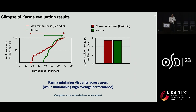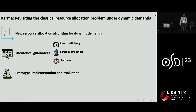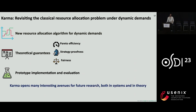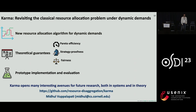In summary, I've presented Karma, a new resource allocation algorithm for dynamic demands with strong theoretical guarantees that translate well into practice. With this project, we've revisited a fundamental aspect of the classical resource allocation problem, which opens up several interesting directions for future work. With that, I'd conclude and be happy to take questions during the session.